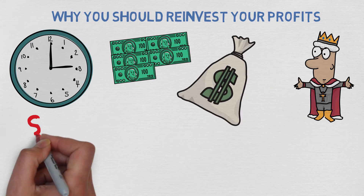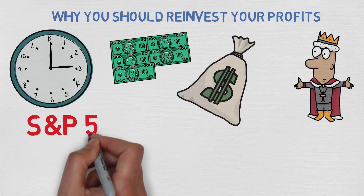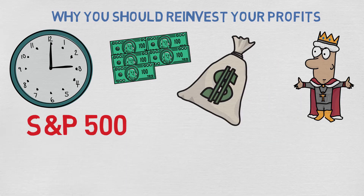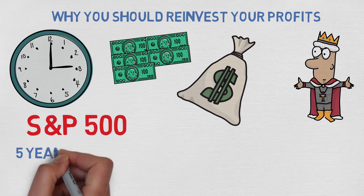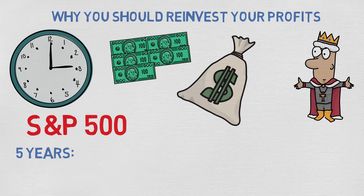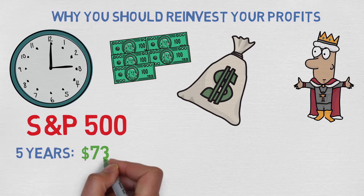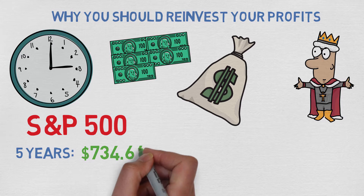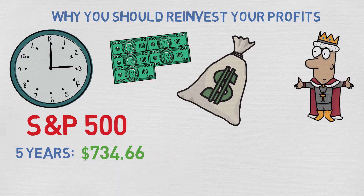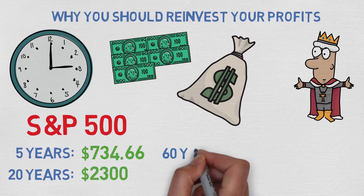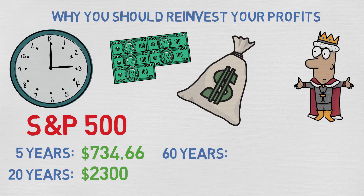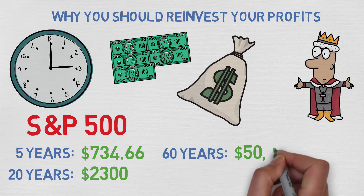Let's say you invest 500 dollars in the S&P 500 for the average 8% return on investment. In 5 years it would be worth 734.66 dollars. In 20 years it would already be over 2,300 dollars. And in 60 years, over 50,000 dollars.